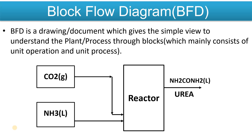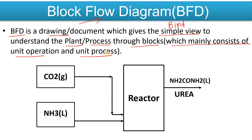So let's start with what is a block flow diagram. The block flow diagram, also known as the BFD, is a drawing or document which gives a simple view — a bird's-eye view or overview — to help you understand the plant. For example, if there is a urea plant, and you are a newcomer or new engineer recruited in a plant, instead of referring the P&ID or PFD, simply go through the block flow diagram first. The BFD will give you a simple view to understand the plant or process through blocks.